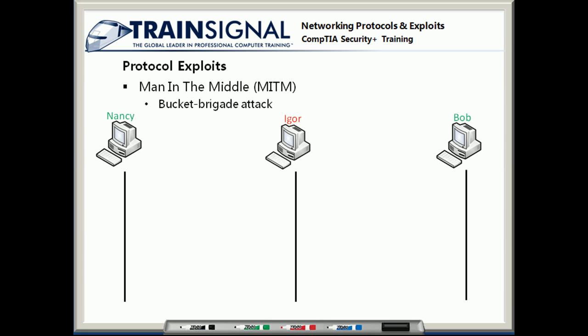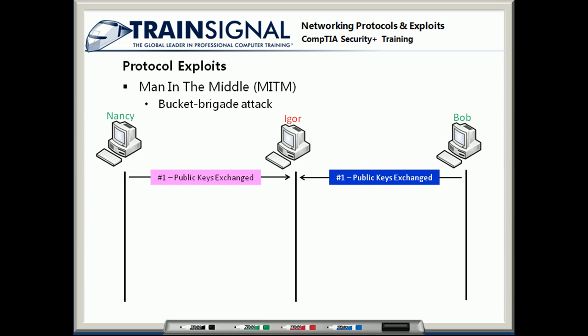The first thing that Nancy and Bob's computers are going to do in order to set up this connection is they're going to exchange public keys with each other, so they know how to encrypt their messages so that the other one can read it. Unfortunately, Igor has spoofed both of those machines, so he's just intercepted both of their public keys. He now has their public keys on his computer.